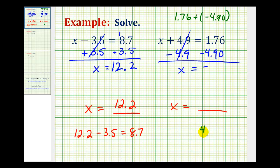So we'll have positive 4.90 minus the absolute value of 1.76, which is positive 1.76.